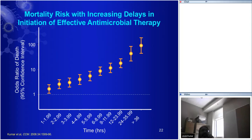The adjusted odds ratio of survival per hour delay shows that if you get your antimicrobial therapy in the second hour of hypotension compared to the first hour, your chance of dying is already statistically increased, and it skyrockets from there. We've repeated this work with much larger numbers and can show a statistical breakpoint at around 20 minutes. In fact, roughly in the first hour, for every five-minute delay in getting effective antimicrobials on board, it's about a 1% increase in projected mortality.